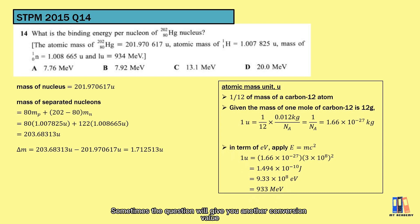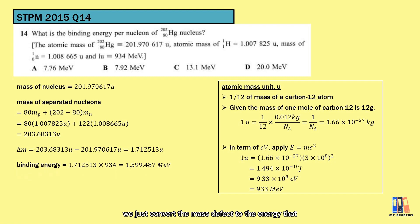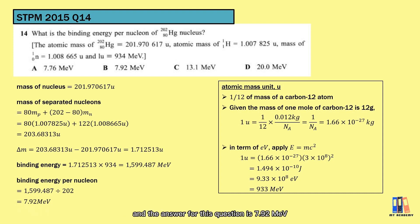Sometimes the question will give you a different conversion value — just follow the conversion given. In this case, 1 U is equivalent to 934 MeV. To get the binding energy, we convert the mass defect to energy: delta m multiplied by 934, which is about 1600 MeV. To obtain binding energy per nucleon, divide by the nucleon number 202, giving the answer of 7.92 MeV.